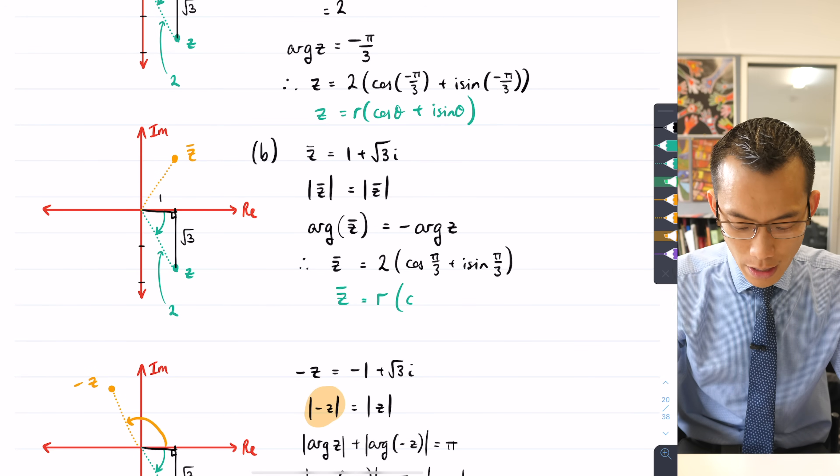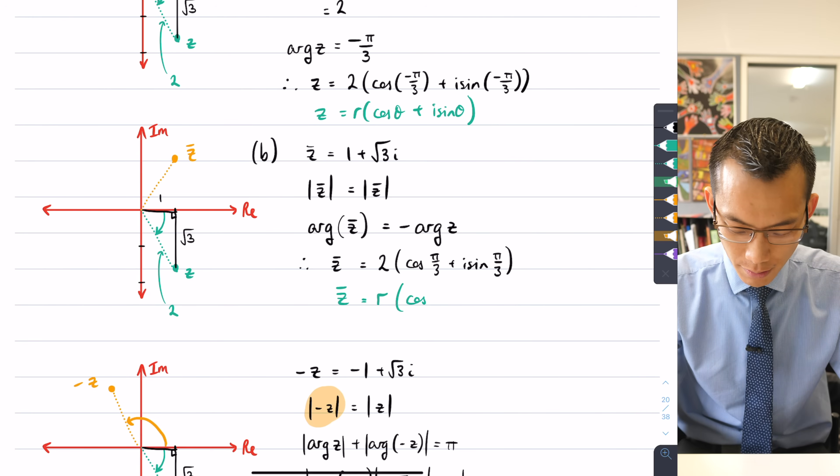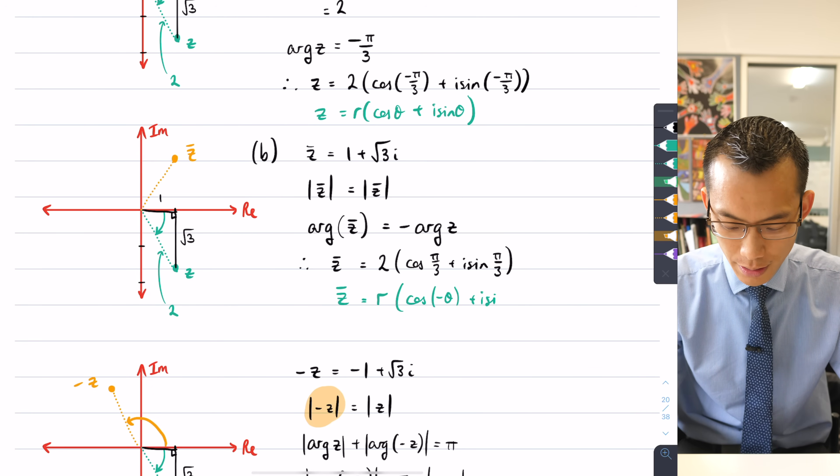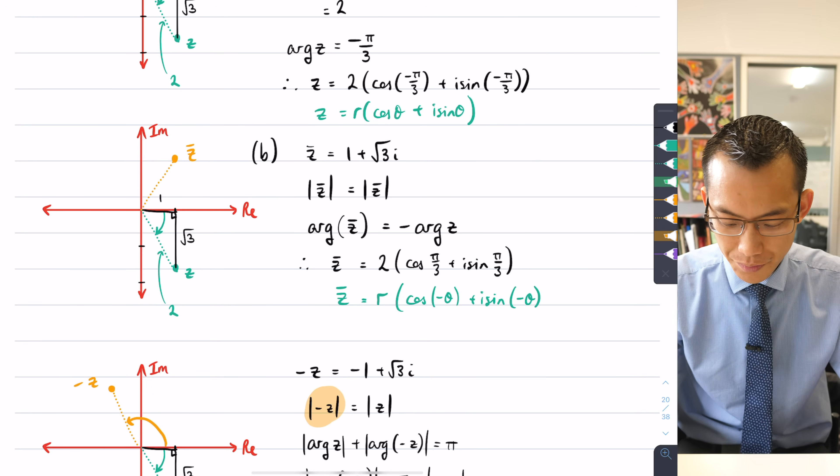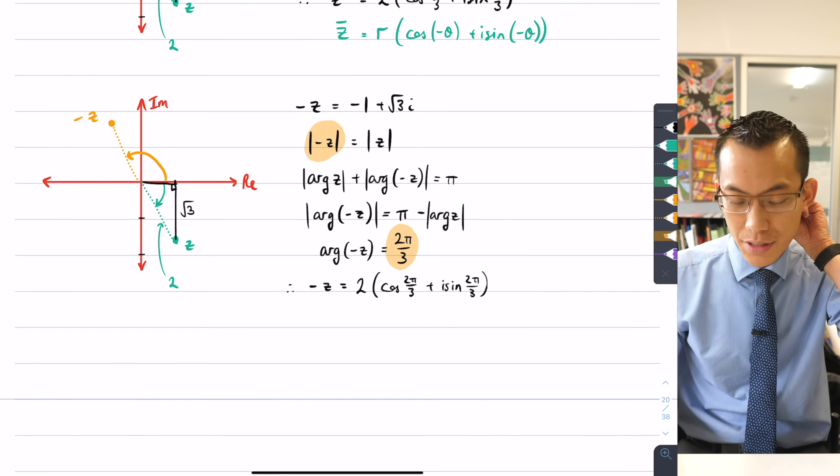but what happens to the angle, it's going to be opposite, right? So it'll be -θ, cos(-θ) + i sin(-θ) in this case, and then what happens down here?